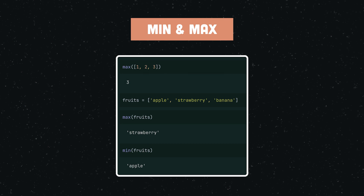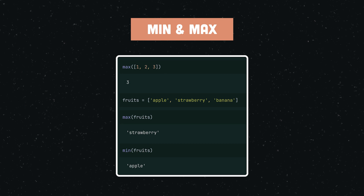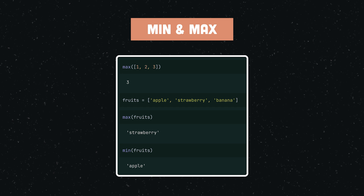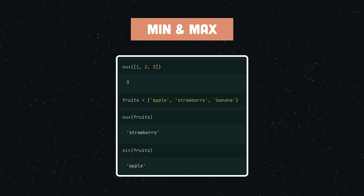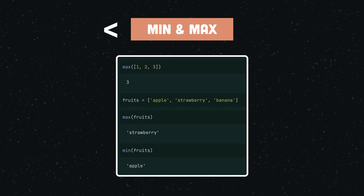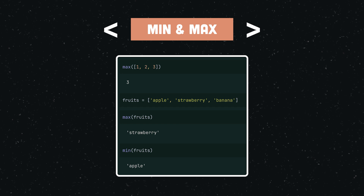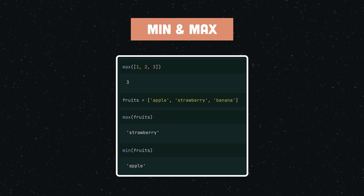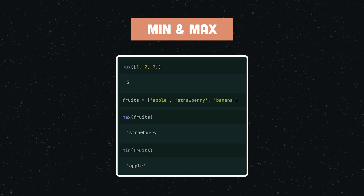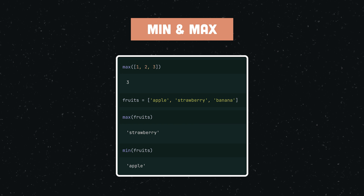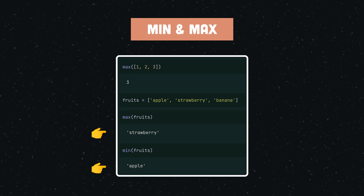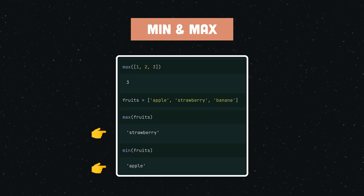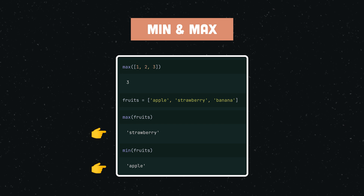As their names suggest, `min()` and `max()` return respectively the minimum and maximum value of an iterable. The usual behavior of Python's less than or greater than operator is applied to determine the output of the functions. Note that if you're confused by the output of the min and max functions on a list of strings, understand that the strings are evaluated based on their alphabetical order.